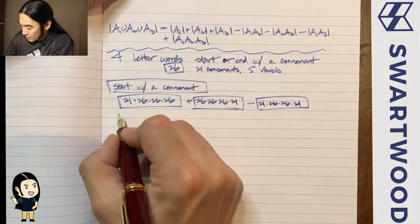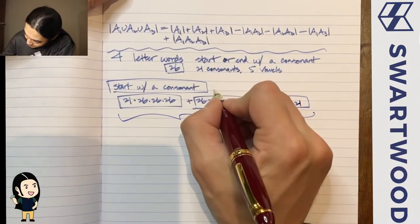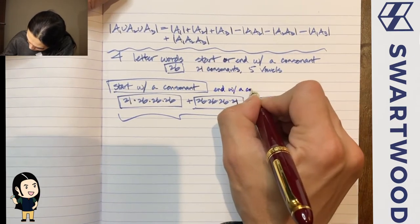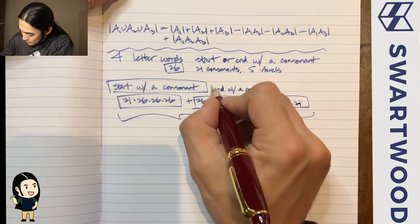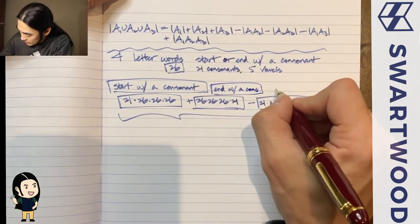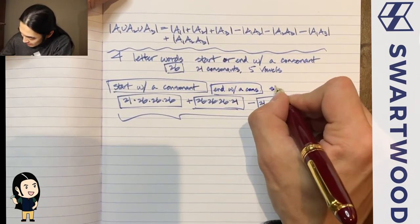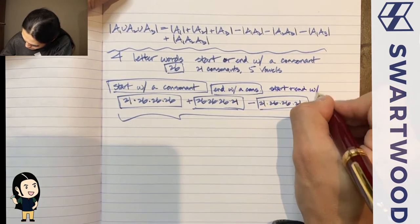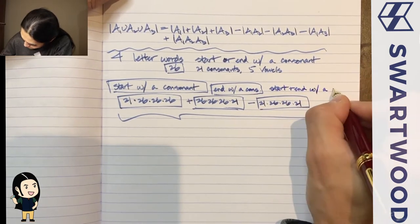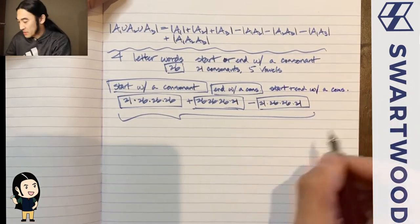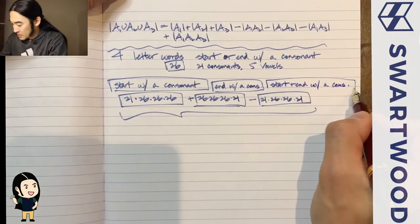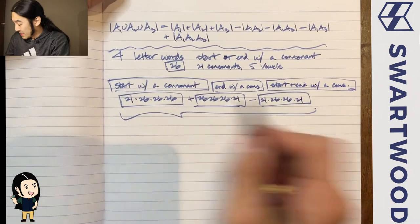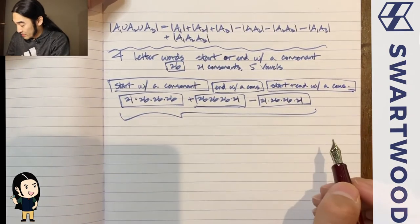So that gives us: words starting with a consonant, plus words ending with a consonant, minus words that start and end with a consonant. This is how we count using PIE.